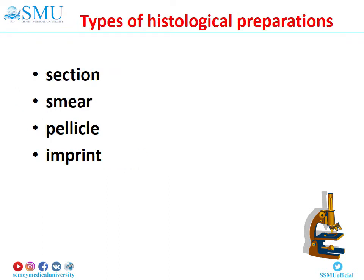Types of histological preparations. Histological preparations can be a section, smear, pellicle, or imprint. A section can be a section of tissue or organ. A smear can be taken from bone marrow or blood.